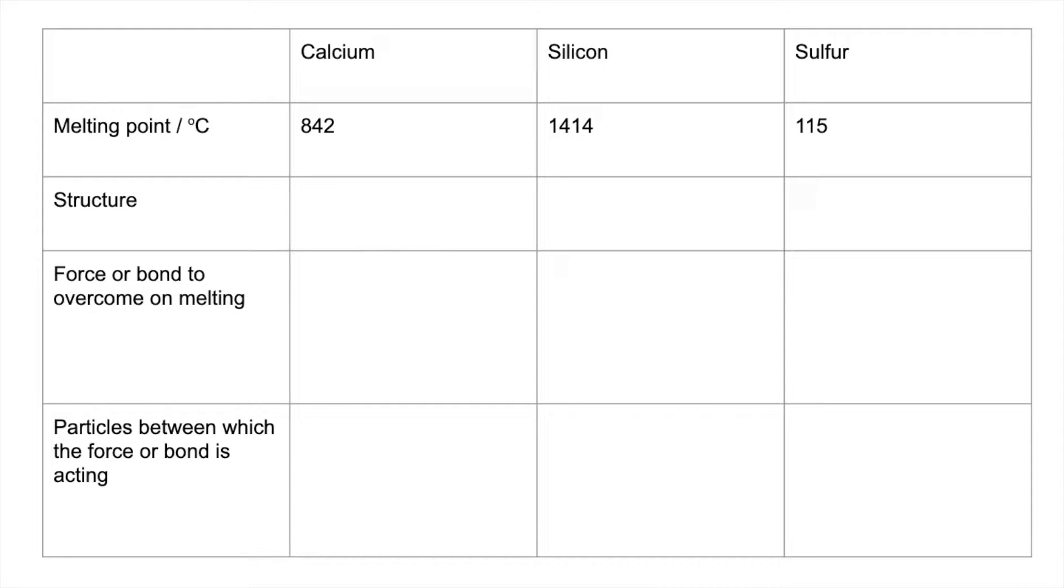Okay, so we'll start with the structures first. Calcium: giant metallic lattice. Silicon: giant covalent lattice. Sulfur: simple covalent lattice.